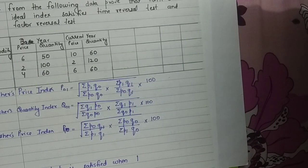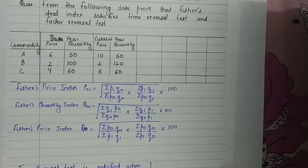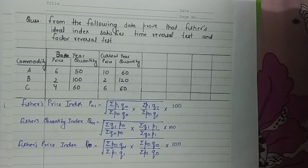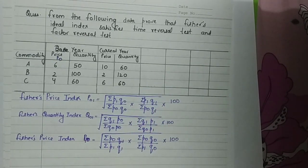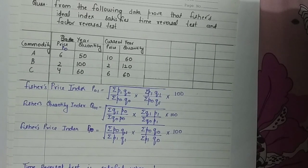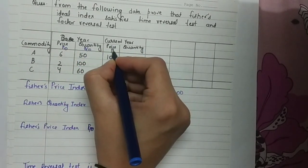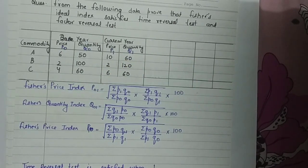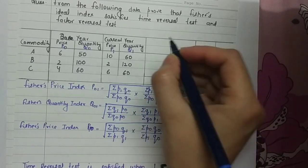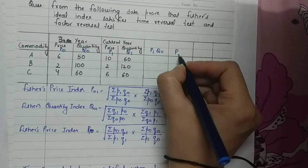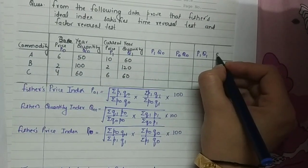Now, a numerical question will demonstrate how the Fisher index satisfies the time reversal test and the factor reversal test — the type of question that can be asked in exams. Data is given for the base year and current year. The base year price is denoted P0, base year quantity as Q0, current year price as P1, and current year quantity as Q1. For the Fisher price index, we need to calculate the columns: P1Q0, P0Q0, P1Q1, and Q1P0.